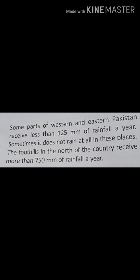Open your book and look at the paragraph. Some parts of western and eastern Pakistan receive less than 125 mm of rainfall a year. Sometimes it does not rain at all in these places. The foothills in the north of the country receive more than 750 mm of rainfall a year.